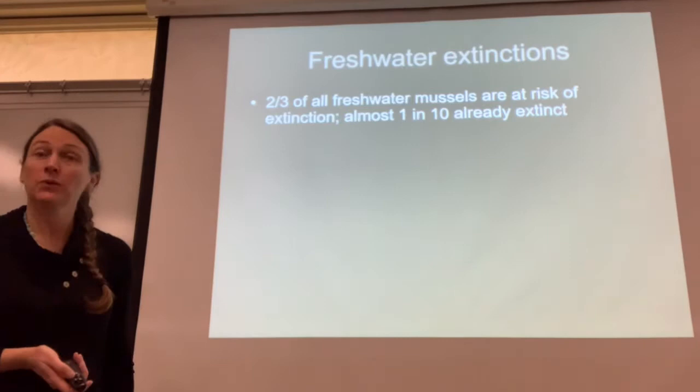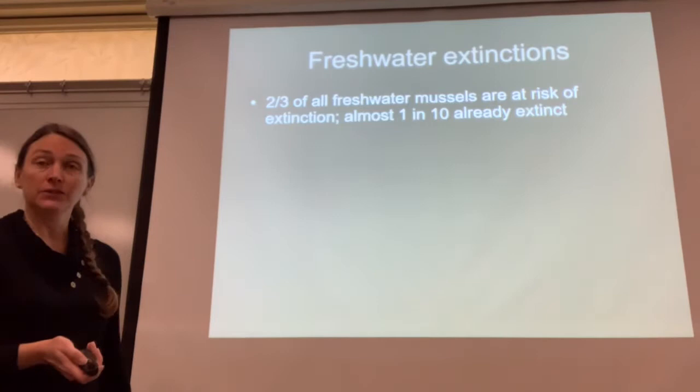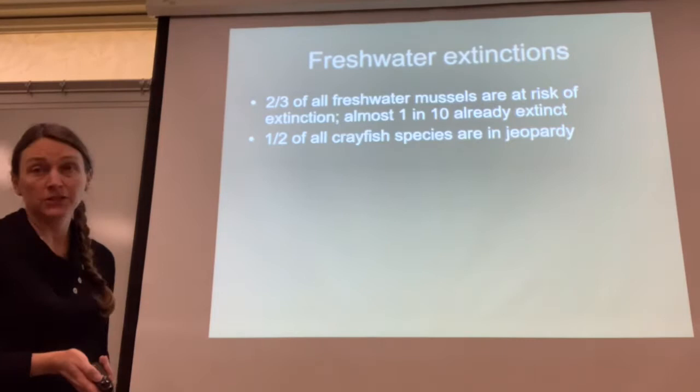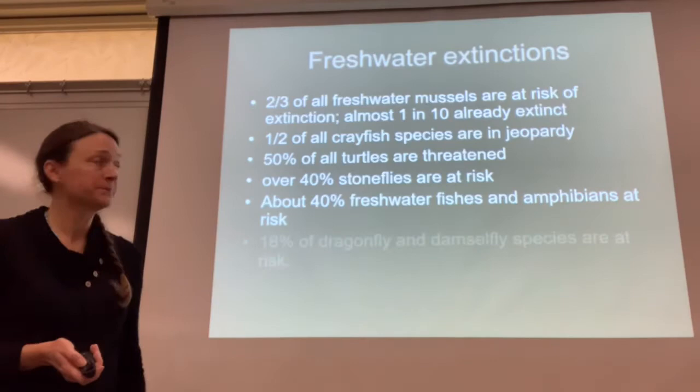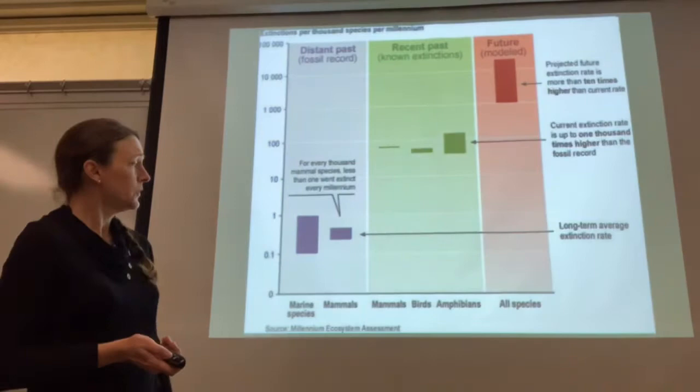Two-thirds of all freshwater mussels are at risk of extinction, and almost one in ten are already extinct. It's really difficult to study freshwater mussels, but research groups around the world do so. One half of all crayfish are already in jeopardy, 50% of all turtles are threatened, over 40% of stoneflies are at risk, about 40% of freshwater fish and amphibians are also at risk, and 18% of dragonfly and damselfly species.